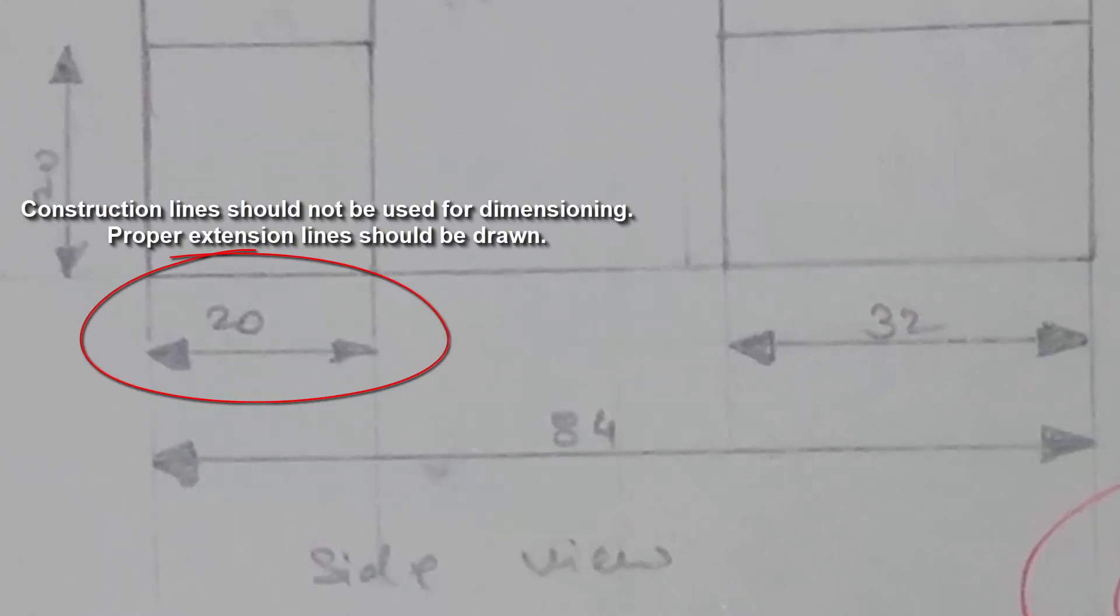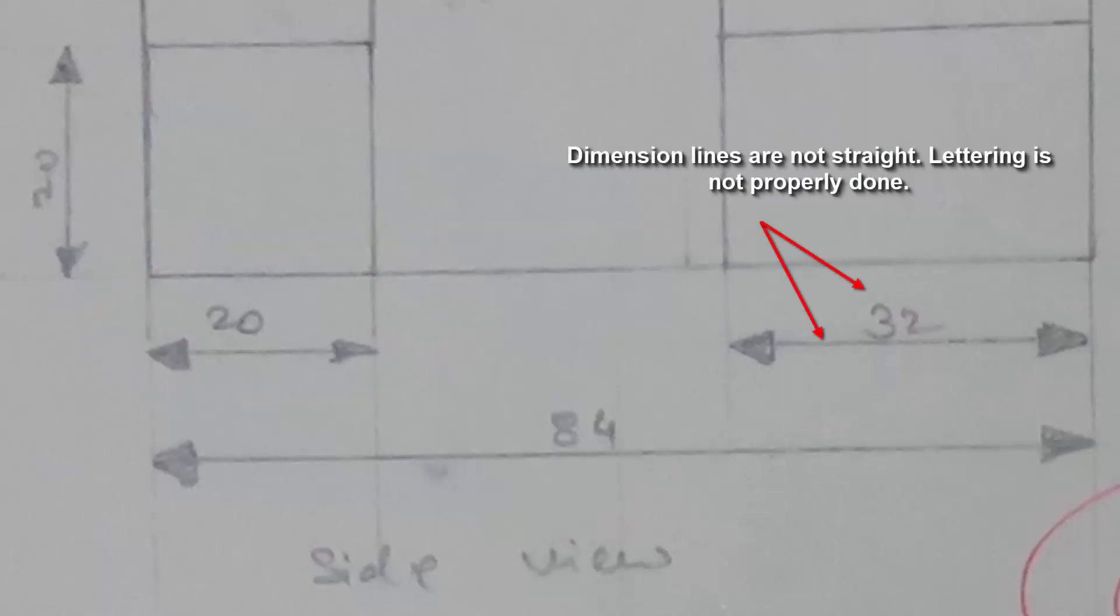Construction lines should not be used for dimensioning. Proper extension lines should be drawn. Dimension lines are not straight. Lettering is not properly done.